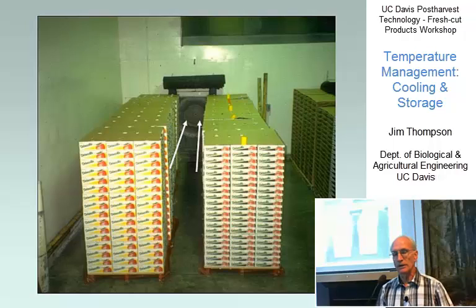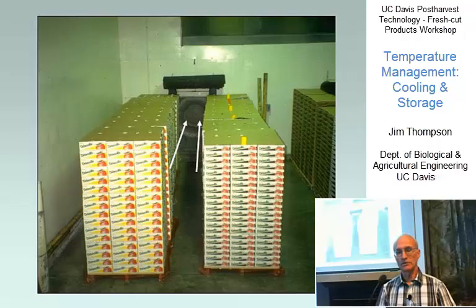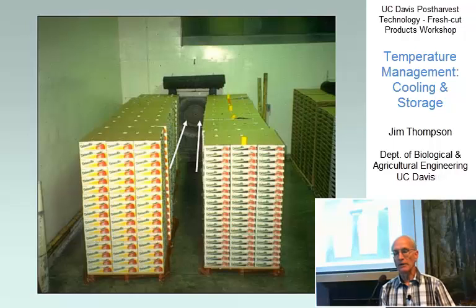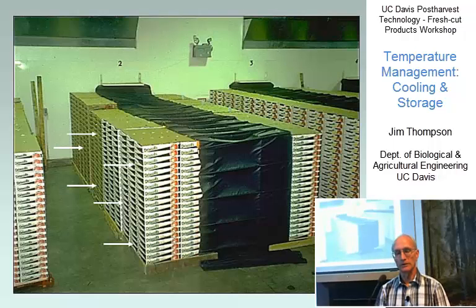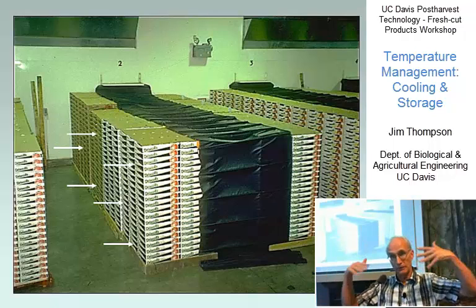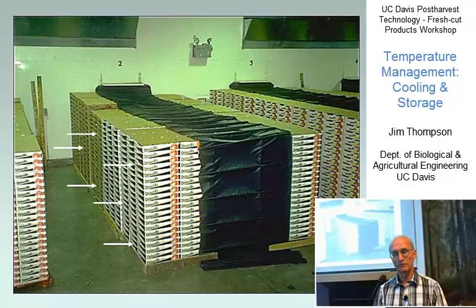Here you can see a picture with strawberries — the fan is in the back. The tarp is black and hasn't been unfurled yet, but it will be rolled out to cover that open area, and the air will flow through the berries and return to the fan, be recooled, and recirculated in the room. In this picture with the tarp in place and the fan on, you'll notice how the black tarp is sucked down because of the negative pressure in that return column.